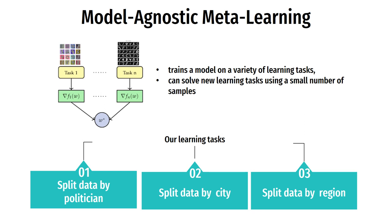We produced different tasks by using different data-splitting principles. In the first approach, we split data by politician, training on data from some politicians and adjusting the trained model on data from a new politician. In the second approach, we split data by city, training on tasks representing different cities. In the third approach, we split data by region, training on data related to different regions.